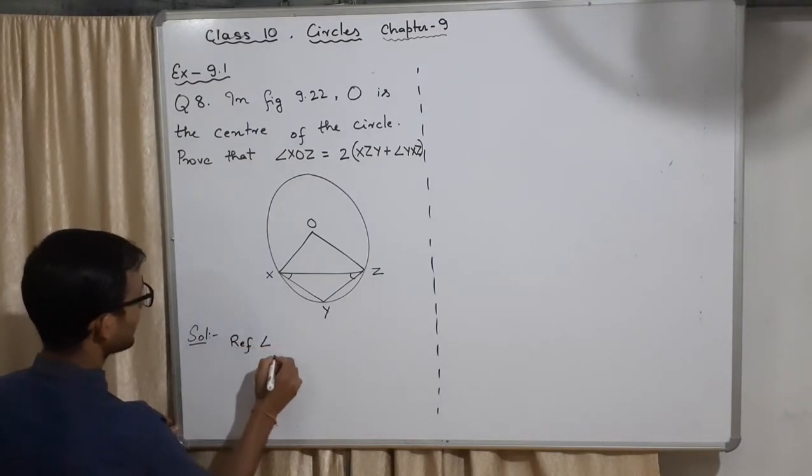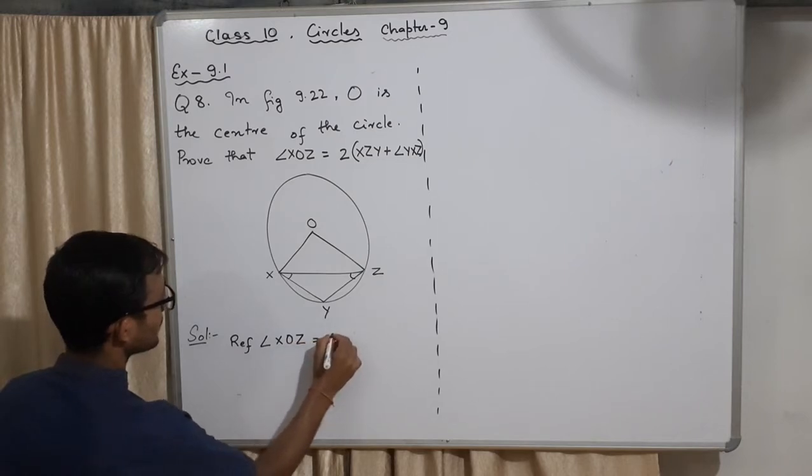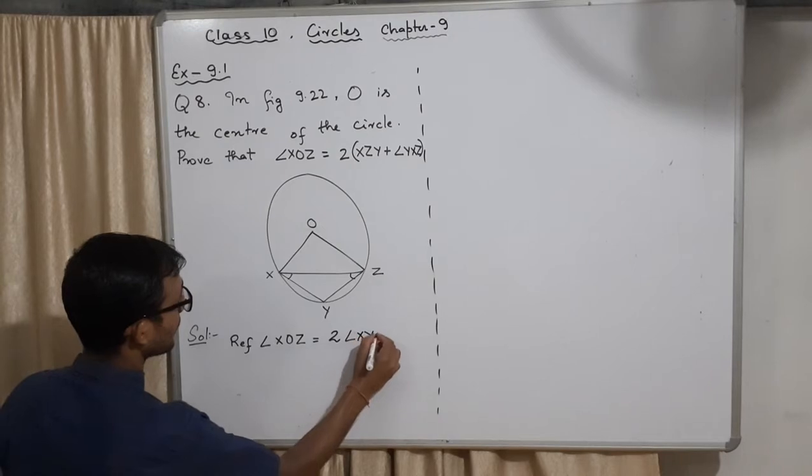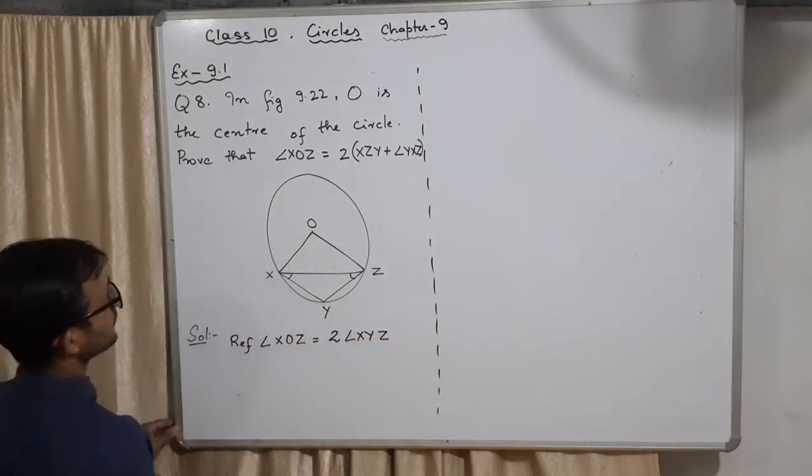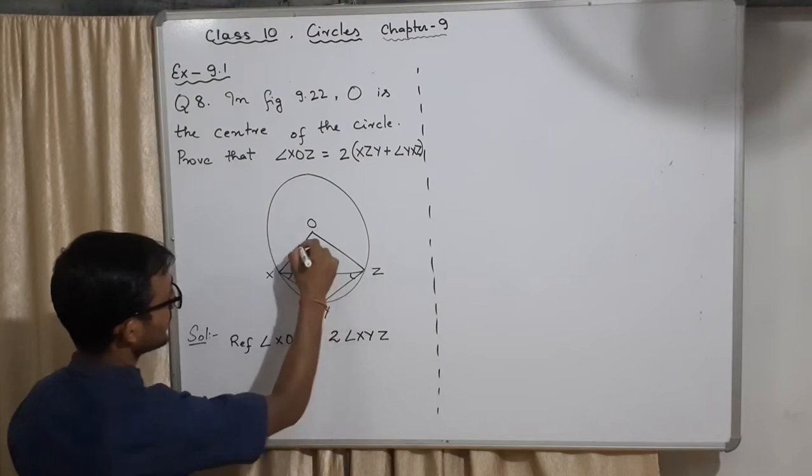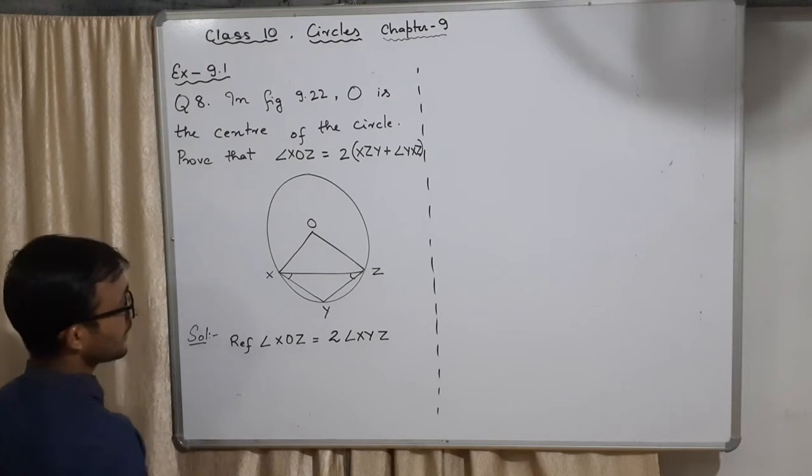First of all, reflex angle XOZ is equal to 2 times angle XYZ. Okay, this angle is double of this. There is a theorem there. What is the reason for that? Angle subtended at the center is equal to the angle subtended...